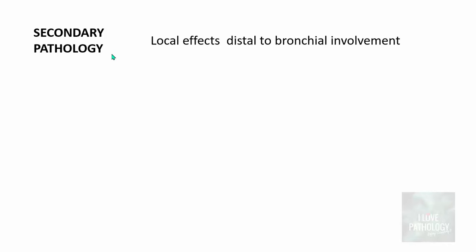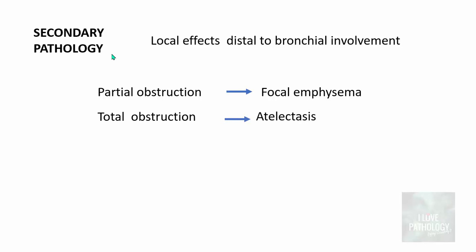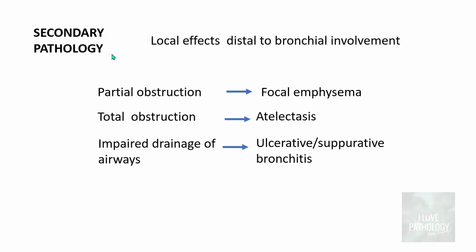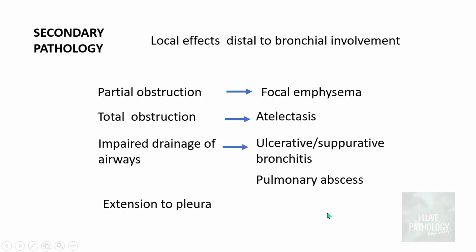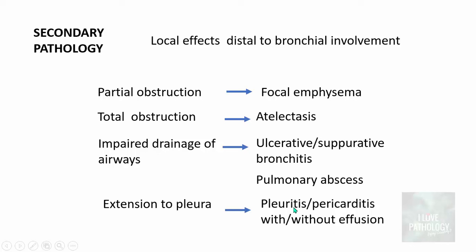There is also secondary pathology in the lungs due to local bronchial involvement. If the squamous carcinoma is predominantly an intraluminal obstructing mass, partial obstruction results in focal emphysema, while complete obstruction leads to atelectasis. Complete obstruction also impairs airway drainage, resulting in ulcerative or suppurative bronchitis, and finally pulmonary abscess formation. The tumor can also extend directly to the pleura causing pleuritis, or into the pericardium causing pericarditis.